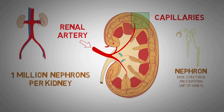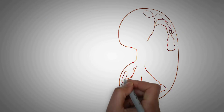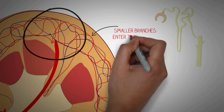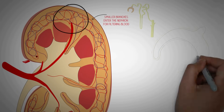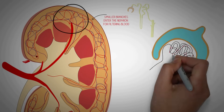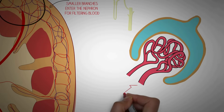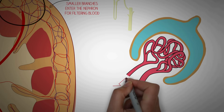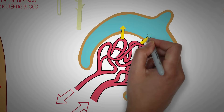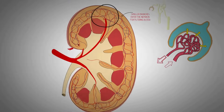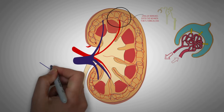The renal artery enters the kidney and divides into many smaller branches which ultimately divide into minute branches known as capillaries. Each of these capillaries enters the nephron and forms a tuft of blood vessels in this cup-shaped structure known as the Bowman's capsule, where filtration of blood takes place. The blood enters the nephron through one vessel and leaves via another. The waste products and water leave the blood into the nephron and the pure blood exits through the blood vessel, ultimately draining into the renal vein.